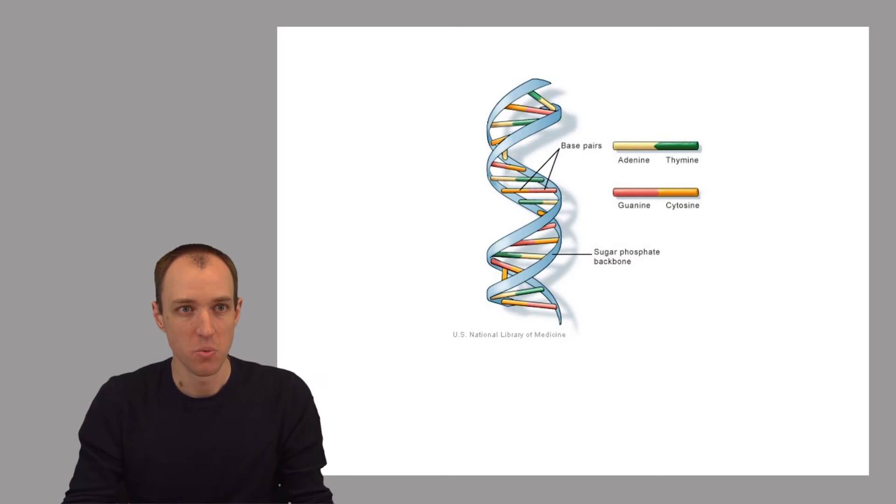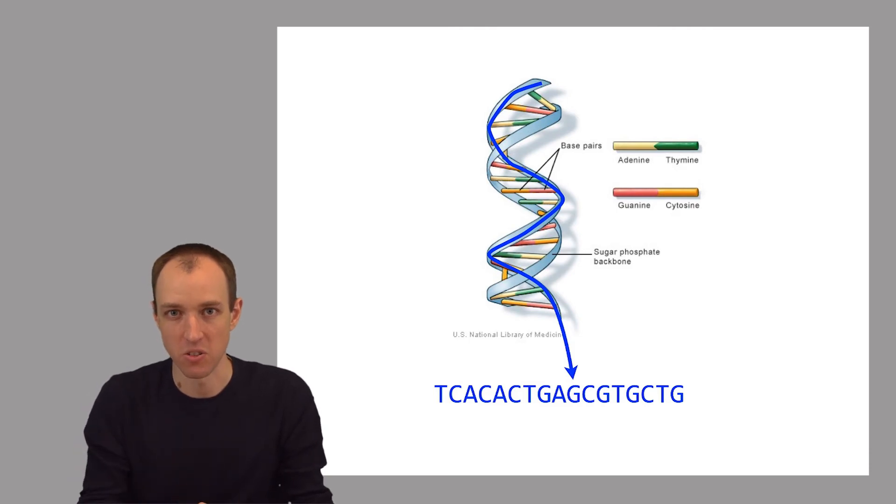So we can sequence this short bit of DNA just sort of by eye, by looking at the colors of the rungs of this ladder. So how does a DNA sequencer sequence a genome?